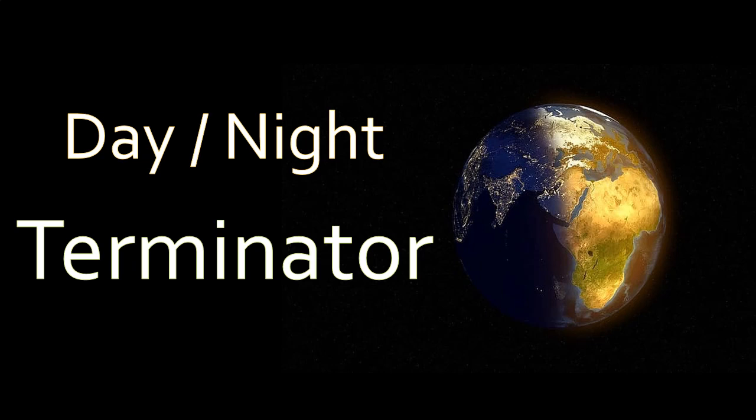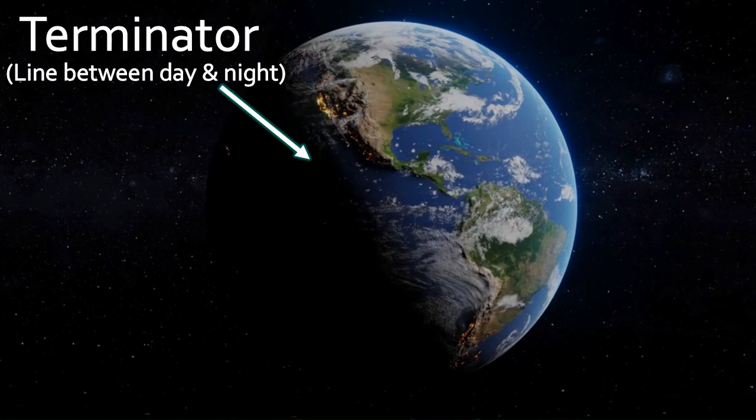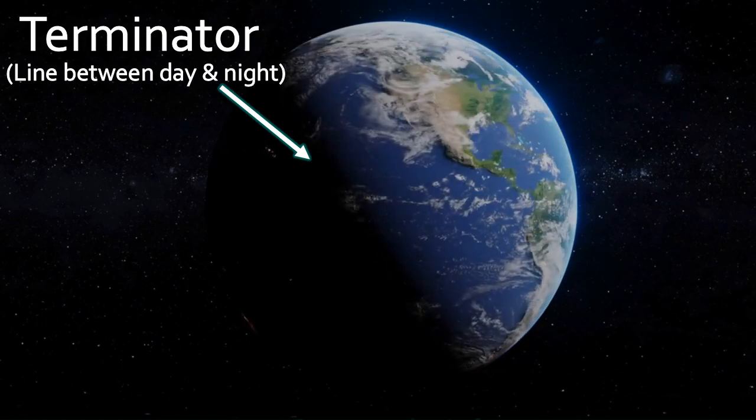The terminator, also known as the gray line and referred to as the twilight zone. Hello friends, welcome to Top Brain GK. Today we are going to learn about what is terminator. Terminator is the moving line that separates day and night on Earth or any other planetary globe.